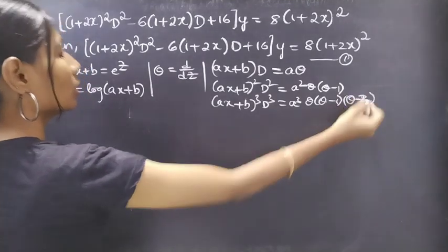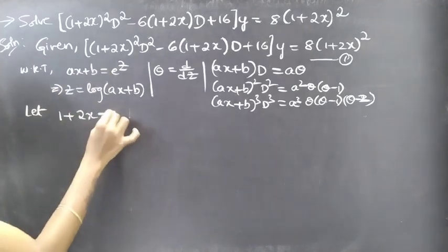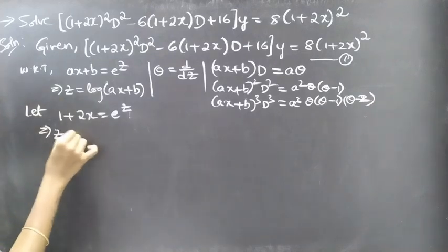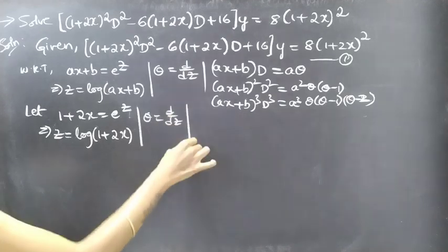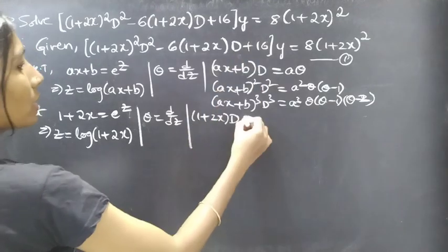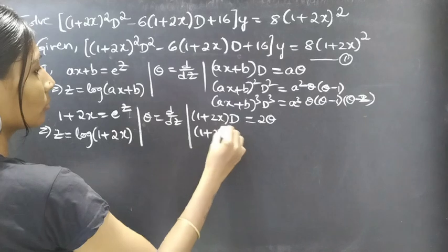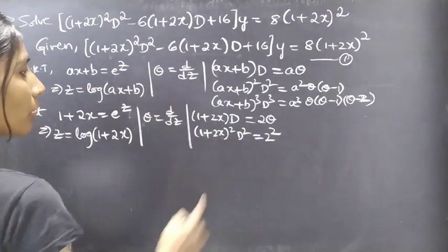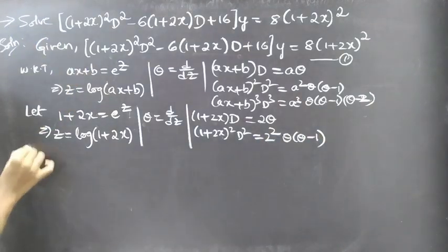Coming to our problem, let 1+2x = e^z. Then z = log(1+2x), and θ = d/dz is the differential operator. Now, (1+2x)·D can be replaced by 2θ (coefficient of x is 2), and (1+2x)²·D² can be replaced by 2²·θ(θ−1) = 4θ(θ−1).